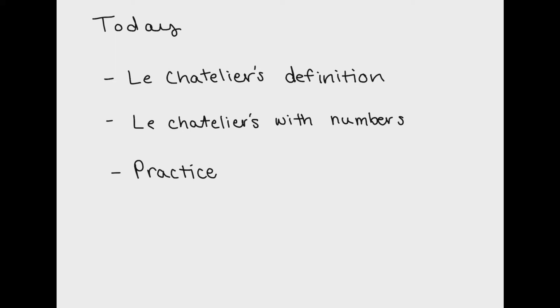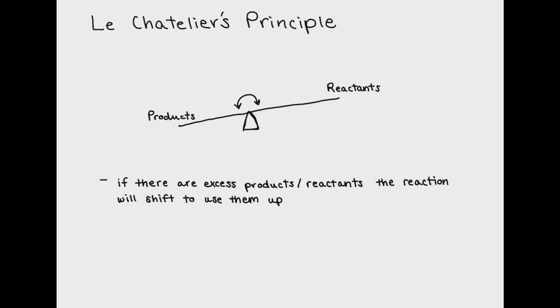I will have another video that's more practice problems with numbers. So let's start by defining Le Chatelier's principle. I like to think of Le Chatelier's as a seesaw. Le Chatelier's is a balancing act which means that if you increase the number of products on one side, you're going to flip the reaction to make it create more reactants.